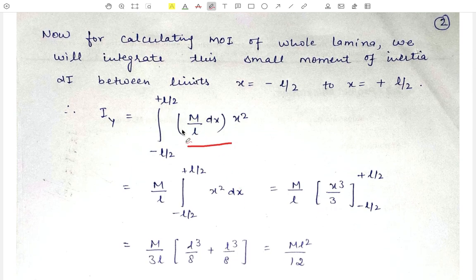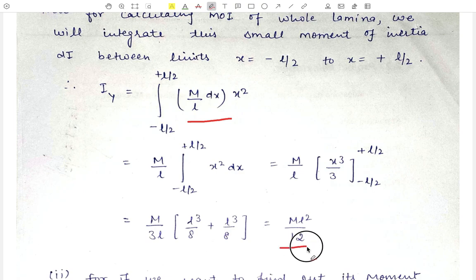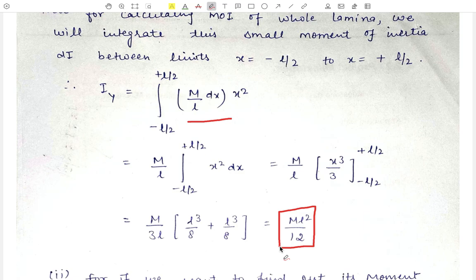Therefore the complete moment of inertia of the whole lamina about the axis will be equal to the integration from −L/2 to +L/2 of (M/L)·x²·dx. Here M/L is a constant and can be taken out of the integration. The integration of x² gives x³/3, evaluated between the limits −L/2 to +L/2. Putting the limits, the moment of inertia equals ML²/12. This is the required moment of inertia about an axis passing through the center of mass and parallel to one of its sides.